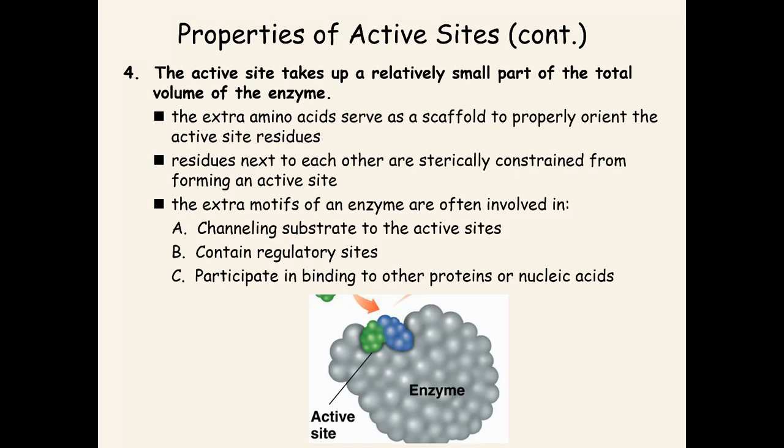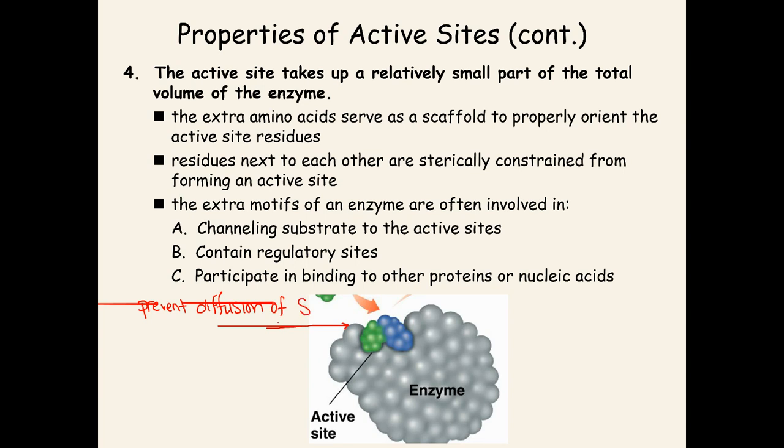The active site takes up a very small portion of the total volume of the enzyme. Any extra amino acids that aren't involved in catalysis would help to hold the substrate in place. What's the advantage of an active site is you're keeping the substrate blocked in there with those weak intermolecular forces, but you prevent it from diffusing. You prevent diffusion of the substrate, and that's really, really important.